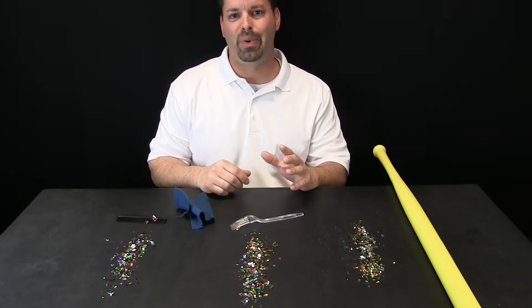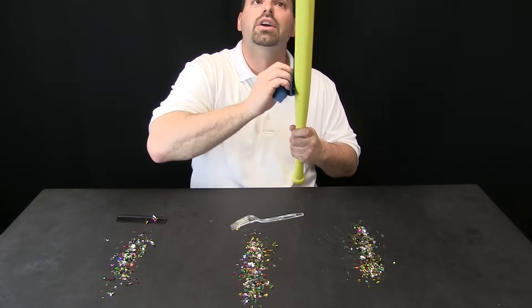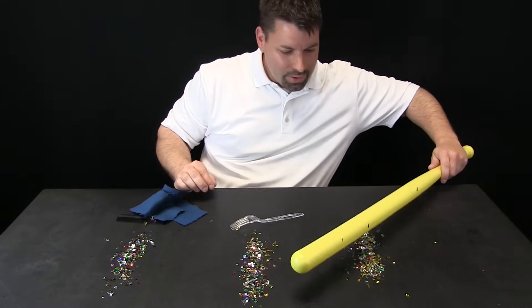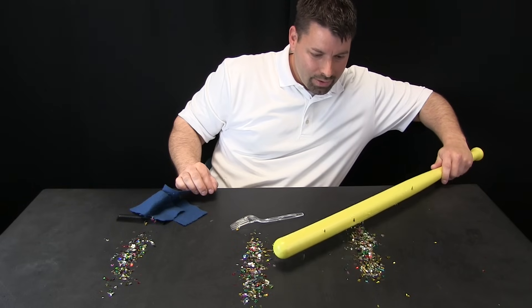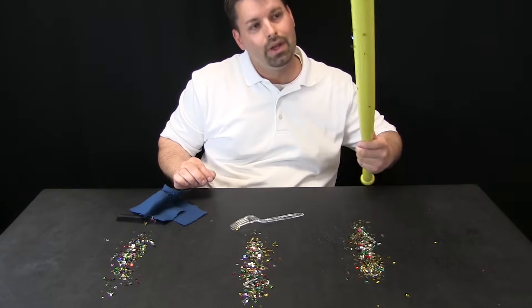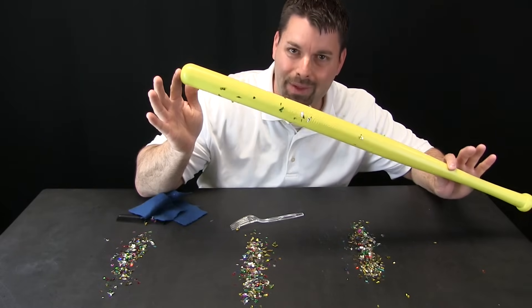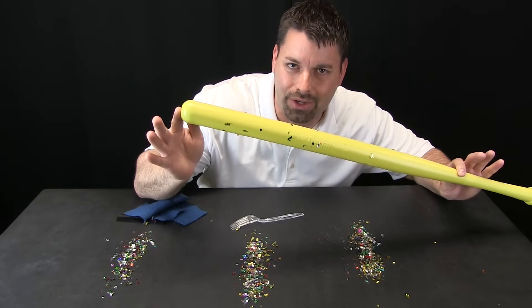Now let us try the plastic bat. We charge it up, and you can actually hear and see the paper stand on end as I wave it over, and it jumps right onto the bat. It did not jump. The positive and negative charges were attracted to each other.